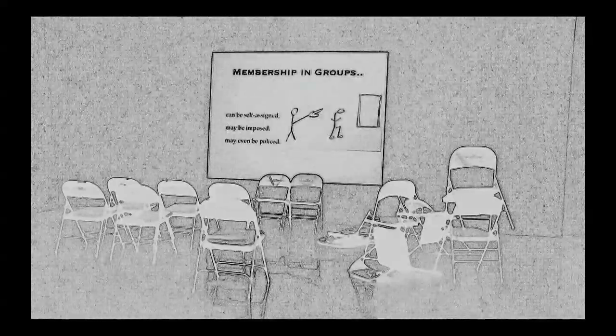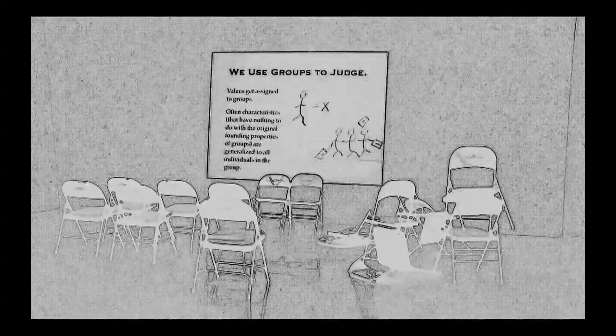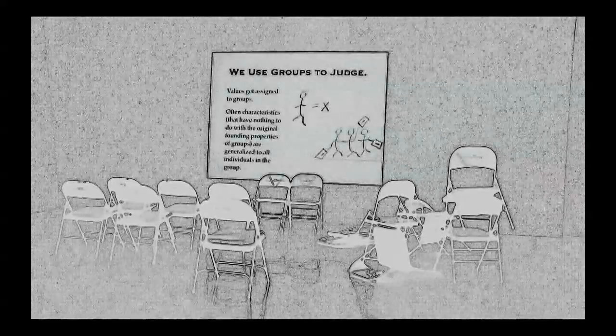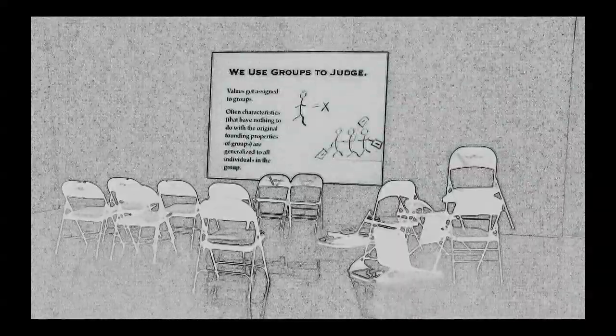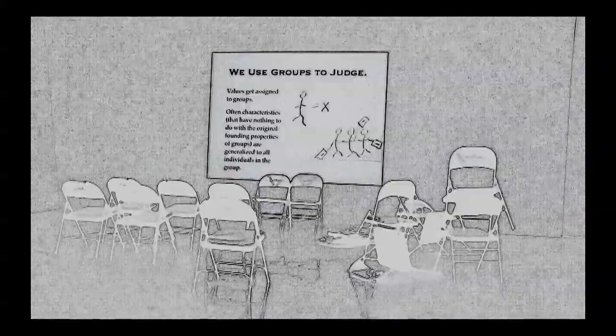This all results in issues of who belongs and who is excluded. Membership in groups can be self-assigned and imposed, or be policed. Groups are used to assert or assign privileges and powers. We use groups to judge. Values are assigned to groups. Often characteristics that have nothing to do with the original founding properties of groups are generalized to all individuals in the group.